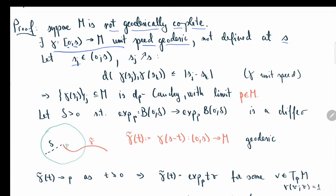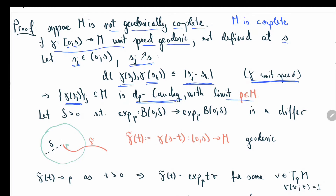Take parameters s_j increasing to s. Then the distance between γ(s_j) and γ(s_k) is always less than |s_j − s_k|, simply because γ was chosen to be unit speed. This implies that the sequence γ(s_j) is a Cauchy sequence. Since M is assumed to be metrically complete, it must have a limit p in M. Around this point p, let's take a normal neighborhood where the exponential map is a diffeomorphism — a normal neighborhood with radius δ.